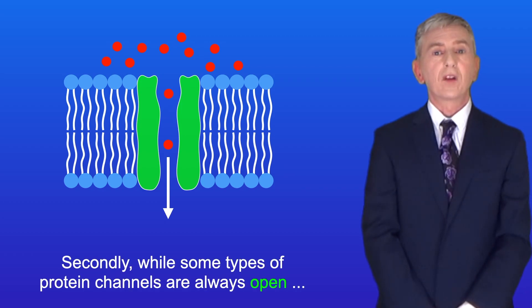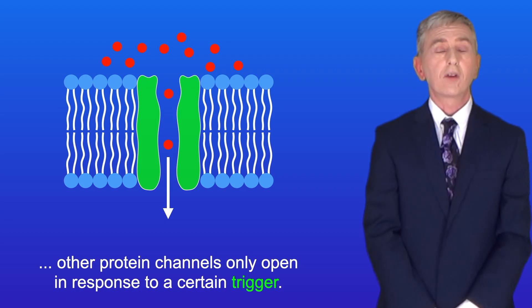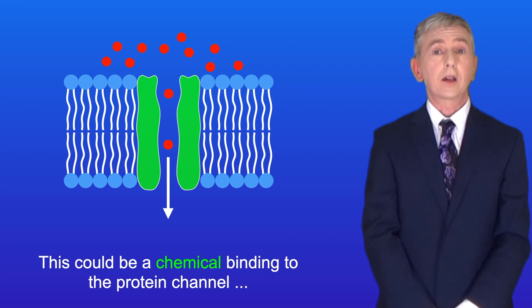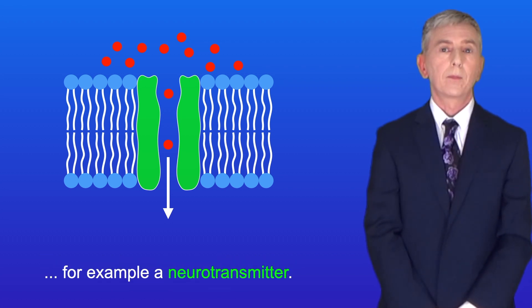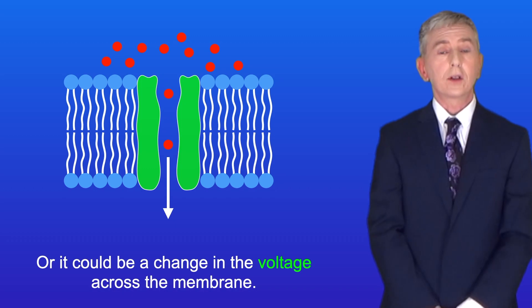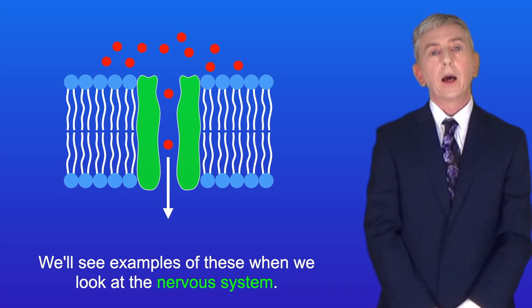Secondly, while some types of protein channels are always open, other protein channels only open in response to a certain trigger. This could be a chemical binding to the protein channel, for example, a neurotransmitter. Or it could be a change in the voltage across the membrane. And we'll see examples of these when we look at the nervous system.